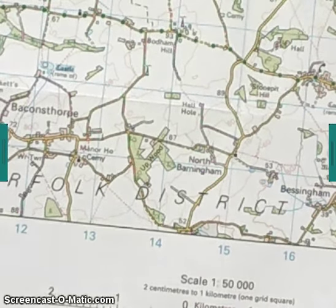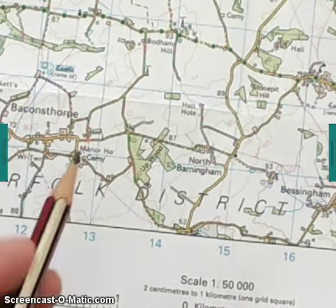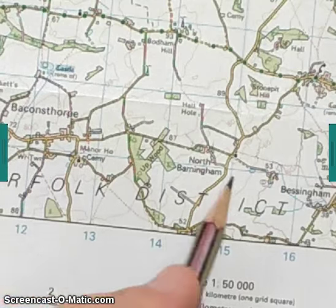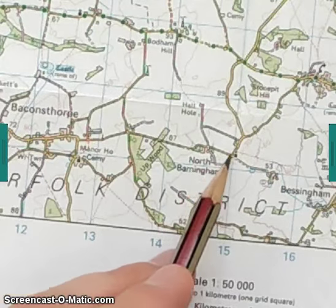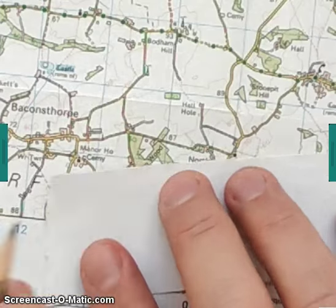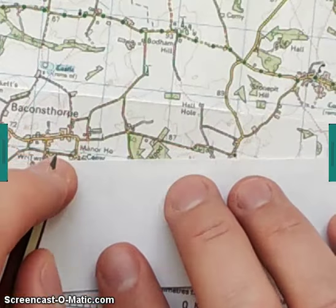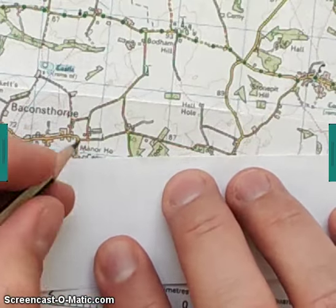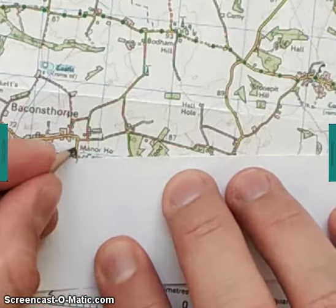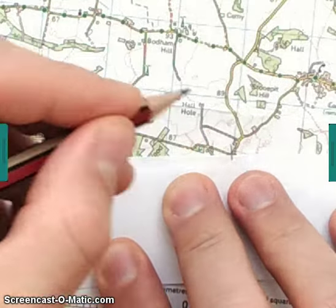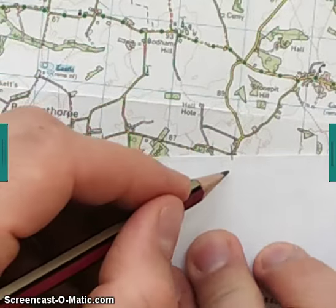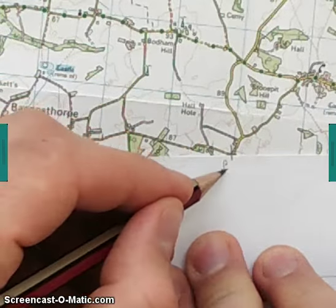We are going to go from Manahoe, this crossroads, to North Barlingham, just next to the church with a tower here. I lay my piece of paper between the two points and mark both points, extending the marks onto the map. Here is my start point, here is my finish point.